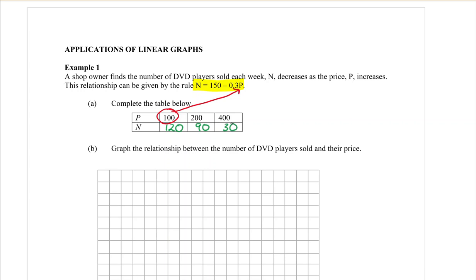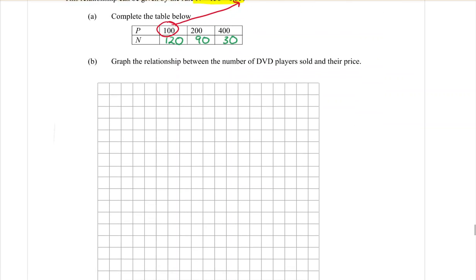Once the table is complete, it says in part B that we want to graph the relationship between the number of DVD players sold and their price. Now you will notice that there is no negative numbers in the table. That's because you can't sell a negative number of DVD players and it would be pretty silly to have a negative price as well. So because we don't have any negative numbers, we don't actually need all four quadrants of this graph. We only need the first one.